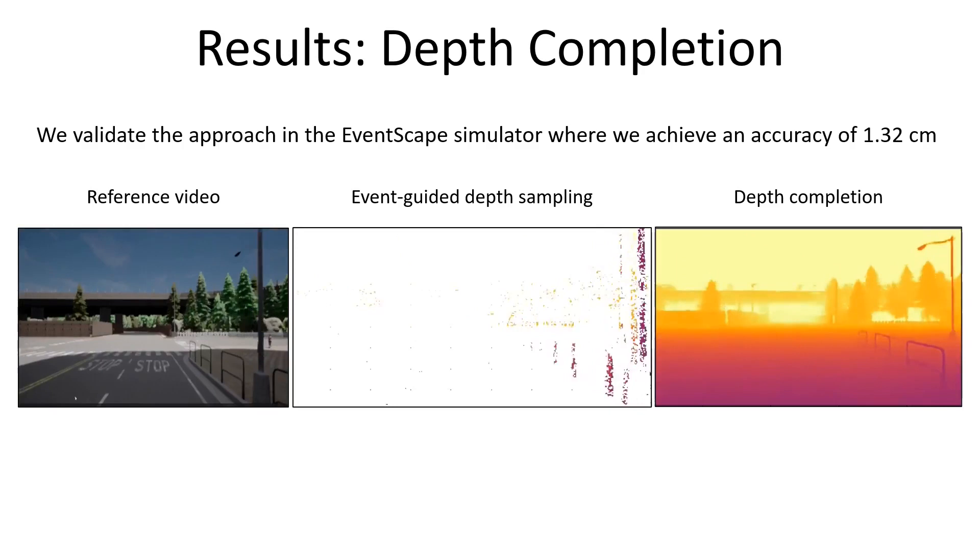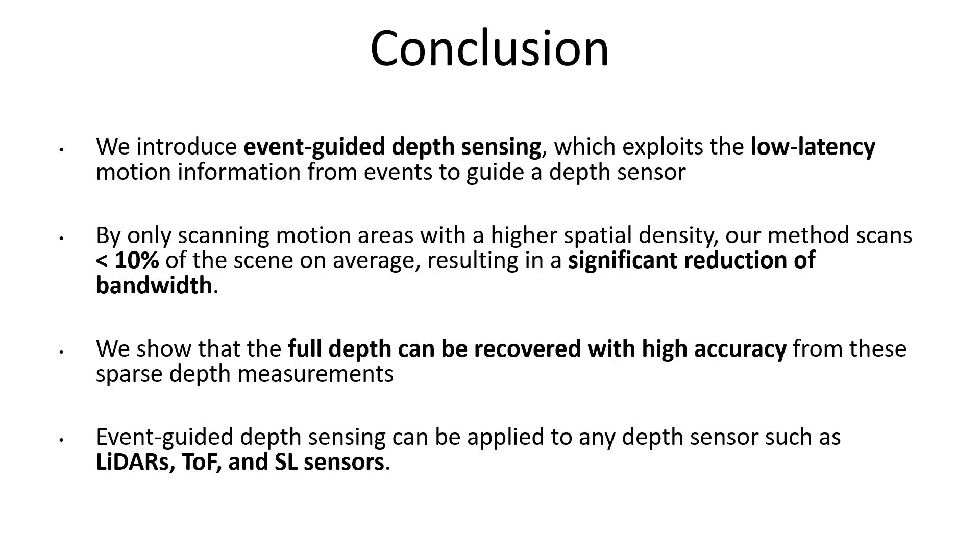In conclusion, we introduce event-guided depth sensing, which exploits the low-latency motion information from events to guide a depth sensor. By only scanning motion areas with higher spatial density, our method scans less than 10% of the scene on average, resulting in significant reduction of bandwidth. We show that the full depth can be recovered with high accuracy from sparse depth measurements.